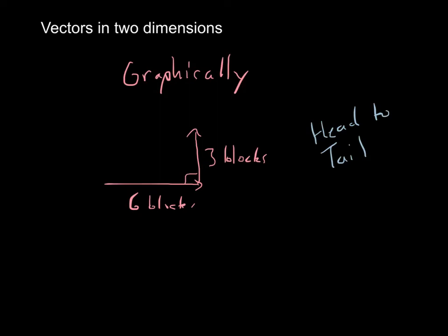If we wanted to draw three vectors, you'd just attach the other one right to the head of that one, the tail of that third vector to the head of my second vector, and we could continue on.